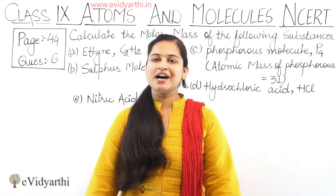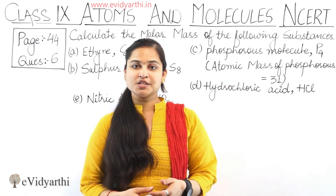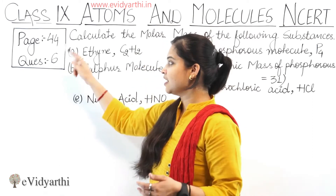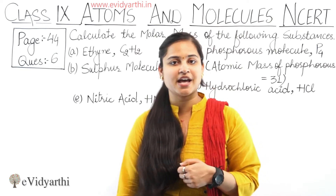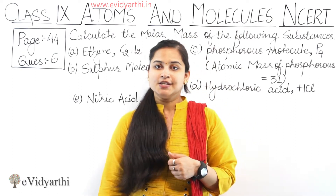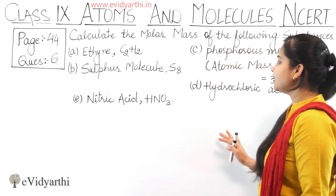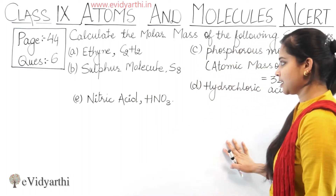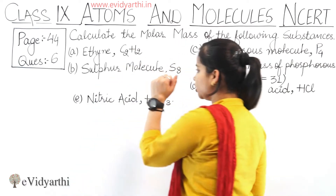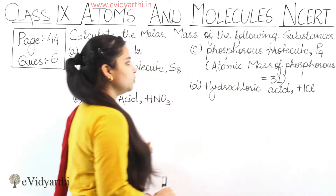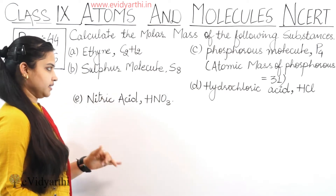Hello everyone, I am Rakhi and in this video I am going to discuss the solution regarding question number 6, which is on page number 44, class 9, chapter 3, Atoms and Molecules, NCERT. The question asks: calculate the molar mass of the following substances — A) ethyne, B) sulfur molecule, C) phosphorus molecule, D) hydrochloric acid, and E) nitric acid.